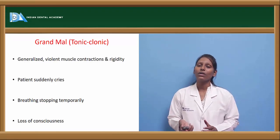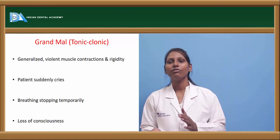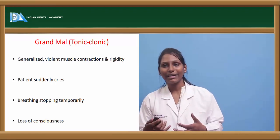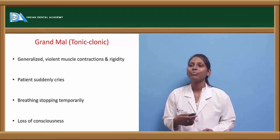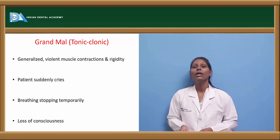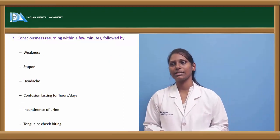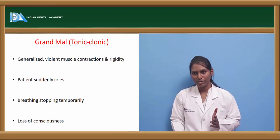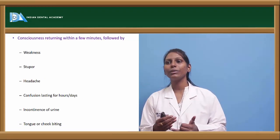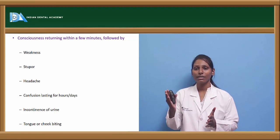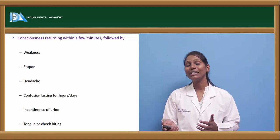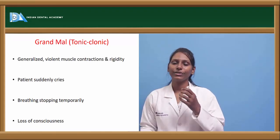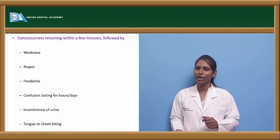Grand mal epilepsy, also called tonic-clonic epilepsy, involves generalized violent muscle contractions and rigidity. The patient suddenly loses consciousness and may cry out. Breathing is temporarily stopped during the ictal phase. Consciousness usually returns within a few minutes, but symptoms such as weakness, stupor, headache, and confusion can persist for hours or even days. Incontinence of urine, and cheek and tongue biting are also seen, with possible bleeding from the mouth.